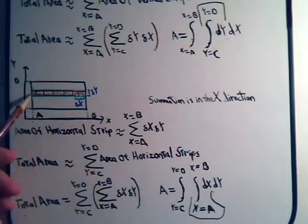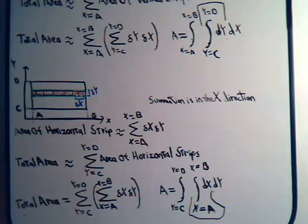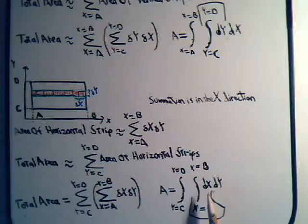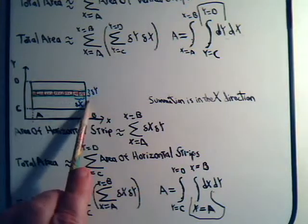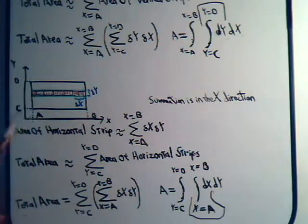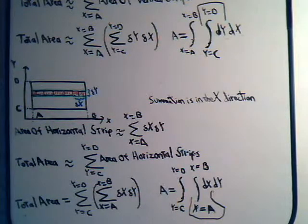Instead of finite shaded regions, with infinitesimally small areas dx dy, adding all of those up gives exactly the area of the figure, expressed now as a double integral of dx dy. When you see a double integral in the form dx dy, you know you're dealing with horizontal strips being constructed from x equals a to x equals b, and adding those strips from y equals c to y equals d. The limits are easy to determine here.